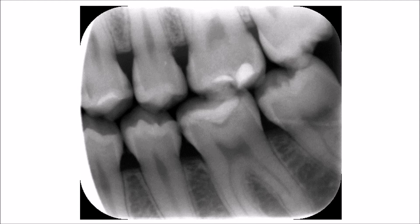On this bitewing radiograph covering the premolars and molars, I want you to look at the upper first molar. You will see there are two fillings, mostly on the occlusal surface. Have a look at the area on the mesial filling — this area you will notice shows something of interest.